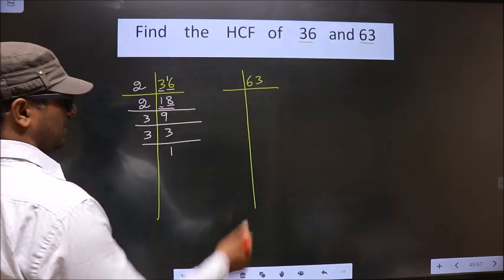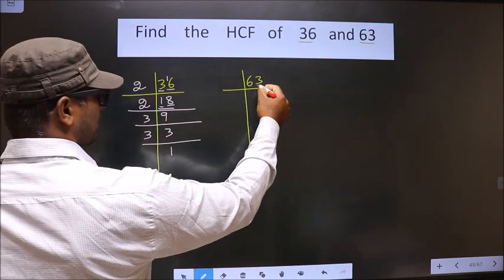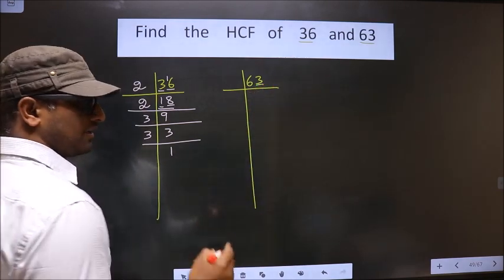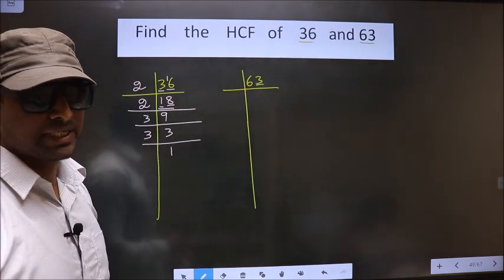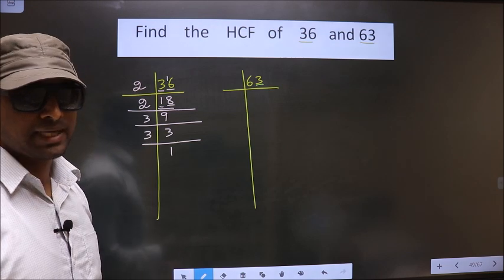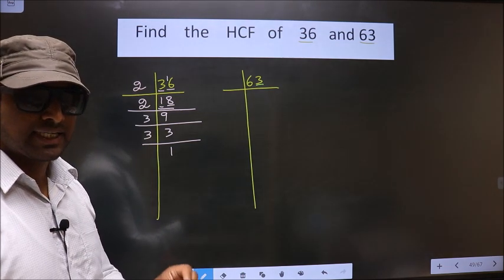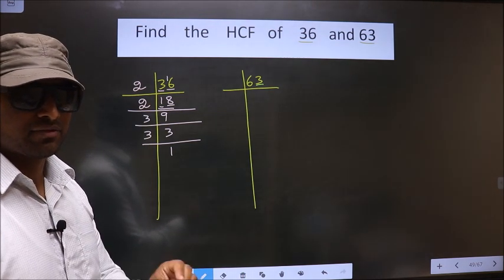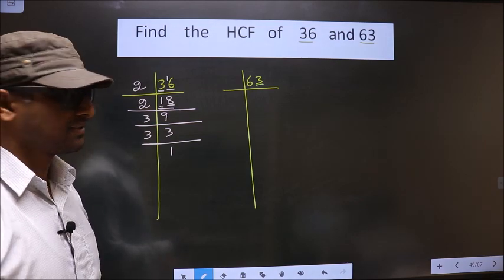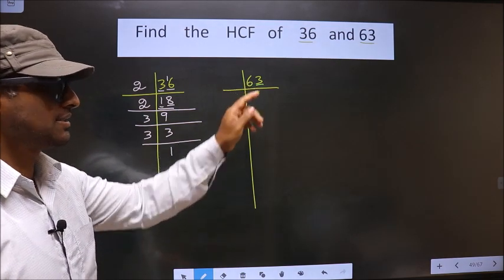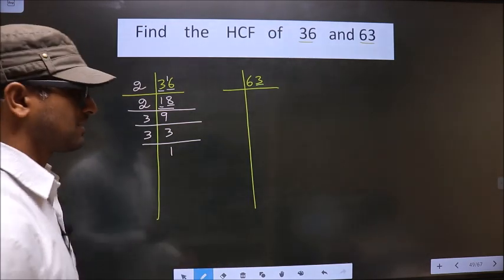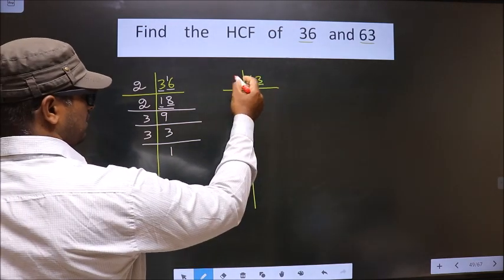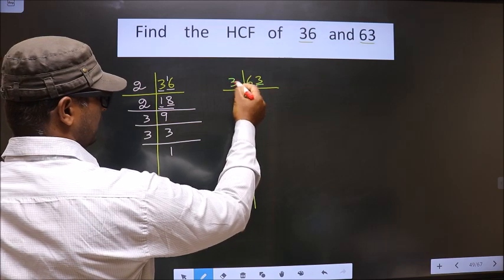Now here, the last digit is 3 which is not even, so this is not divisible by 2. Next prime number is 3. To check divisibility by 3, we should add the digits. That is 6 plus 3 equals 9. Is 9 divisible by 3? Yes. So this number is also divisible by 3, so we take 3 here.